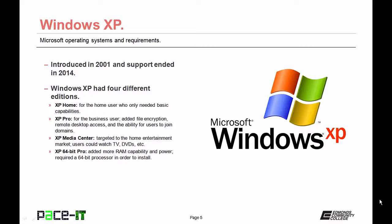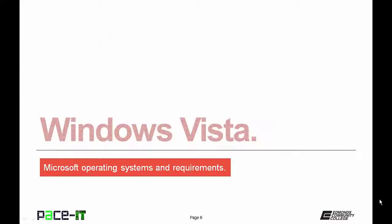Then there was XP 64-bit Professional — XP's only 64-bit edition. It added the capability for more RAM and power but required a 64-bit processor to install the operating system, and those were not that common back then.